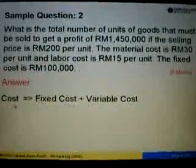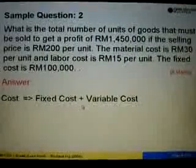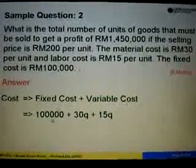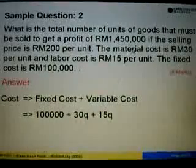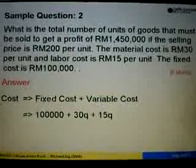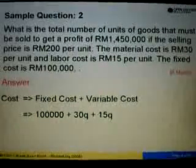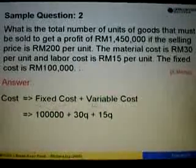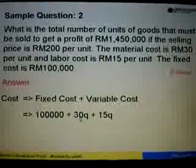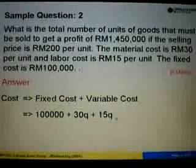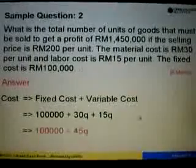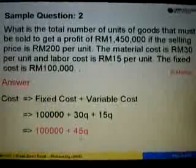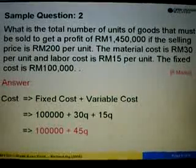Let's start with cost equals fixed cost plus variable cost. Fixed cost is RM100,000. Variable cost includes material cost of RM30 per unit and labor cost of RM15 per unit, so variable cost is 30Q plus 15Q. This gives us RM100,000 plus 45Q.